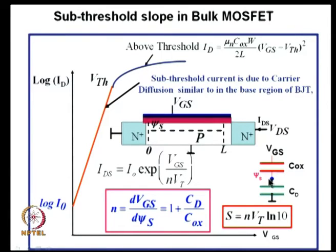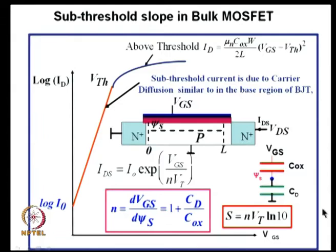n is the one which decides your sub-threshold swing or sub-threshold slope. You want to keep it as close to 1 as possible. n is decided by what is the capacitance between the channel point and the ground point — in this case, Cd. If there is another capacitor in parallel with Cd, like the D_it, the effective capacitance becomes larger, so n will become larger. If there is a capacitor in series with Cd, the entire C effect will come down. Let us see how it works out in SOI MOSFET.